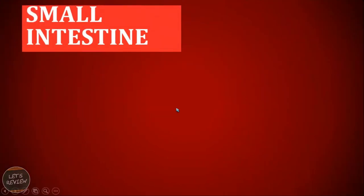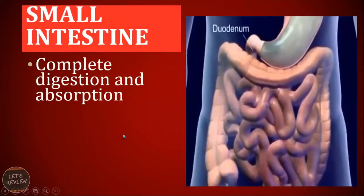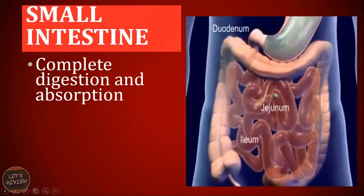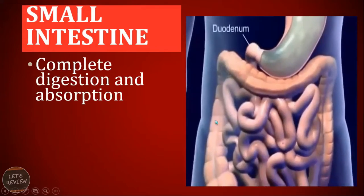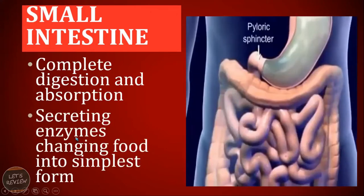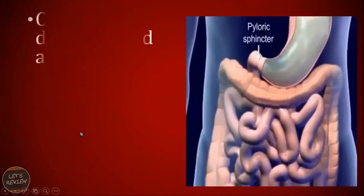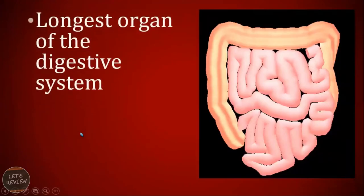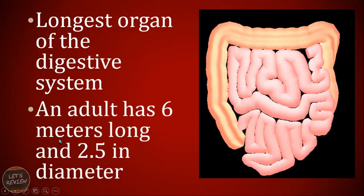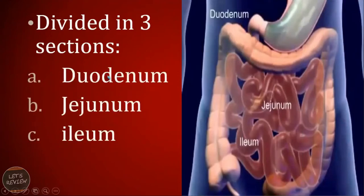Connected to your stomach is the small intestine. This is where complete digestion and absorption happen. It is divided into three parts: the duodenum, jejunum, and ileum. Enzymes are secreted here, changing the food into its simplest form so it can be absorbed by the body and delivered to cells. The small intestine is considered to be the longest organ of our digestive system — in an adult it is approximately six meters long and 2.5 centimeters in diameter.